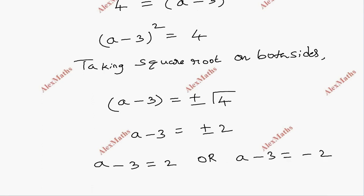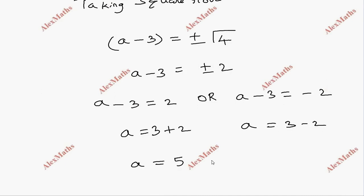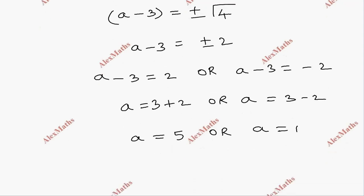Solving both cases: a equals 3 plus 2 equals 5, and a equals 3 minus 2 equals 1. So the values of a are 5 and 1.